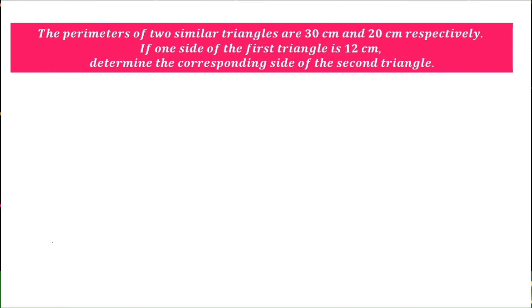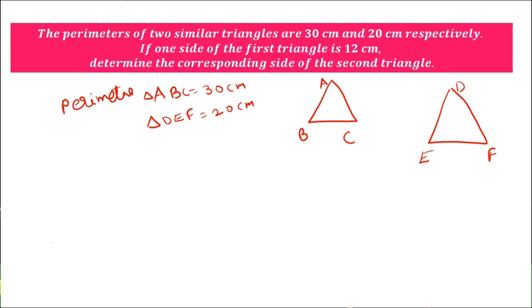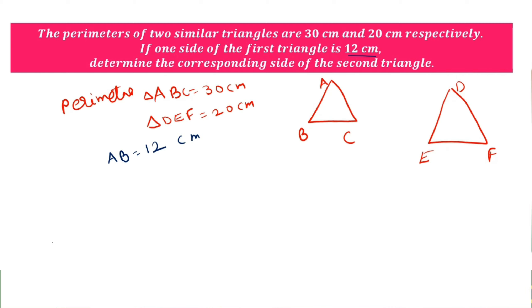Two triangles' names are not given. First of all, let one triangle be ABC and another triangle be DEF. Perimeter of triangle ABC is equal to 30 cm, and perimeter of triangle DEF is equal to 20 cm. One side of the first triangle is given — let AB equal to 12 cm. Find the corresponding side DE of the second triangle.